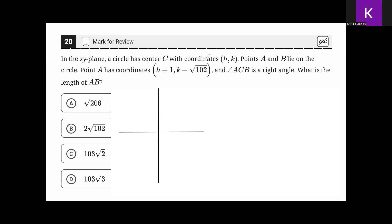One way to solve this problem is to create convenient values for the center of our circle h, k. The most convenient value to use is the origin. So let's set h and k equal to 0 as the center of the circle. Point C is at the origin. That means point A would be at the coordinate 0 plus 1, which is 1, and 0 plus the square root of 102, which is the square root of 102. That points point A somewhere around there.